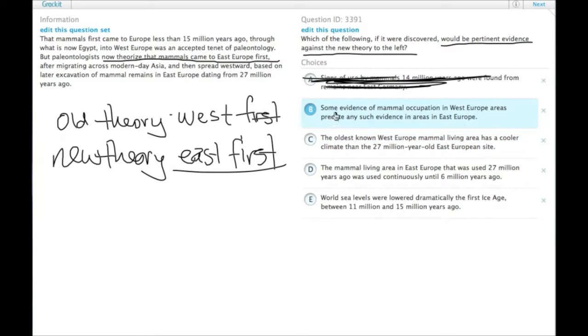B, some evidence of mammal occupation in West Europe areas predate any such evidence in areas in East Europe. So, the new theory is that the East came first, but there's some evidence of mammal occupation in West Europe. Predate means come before, is earlier.